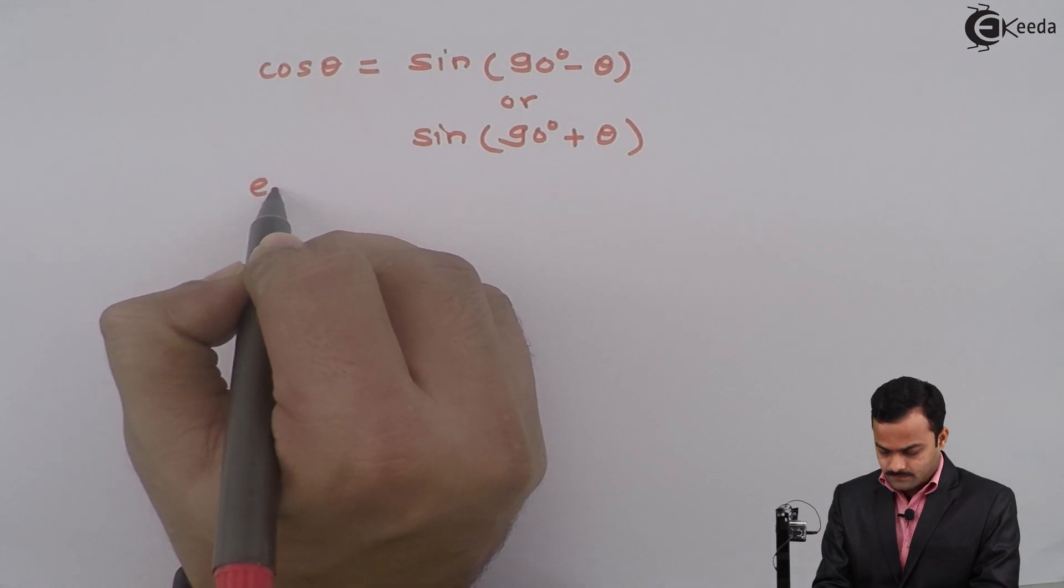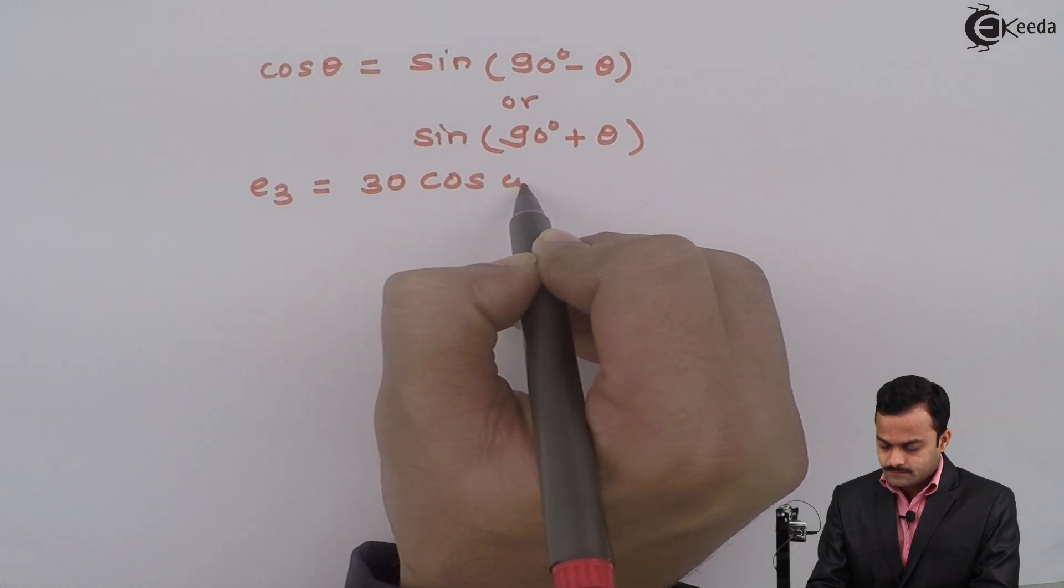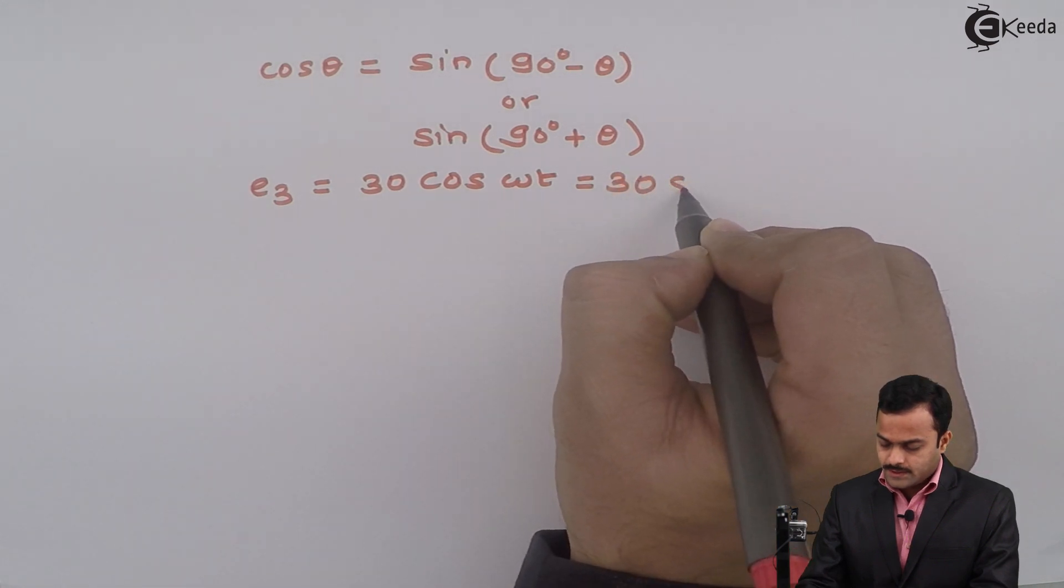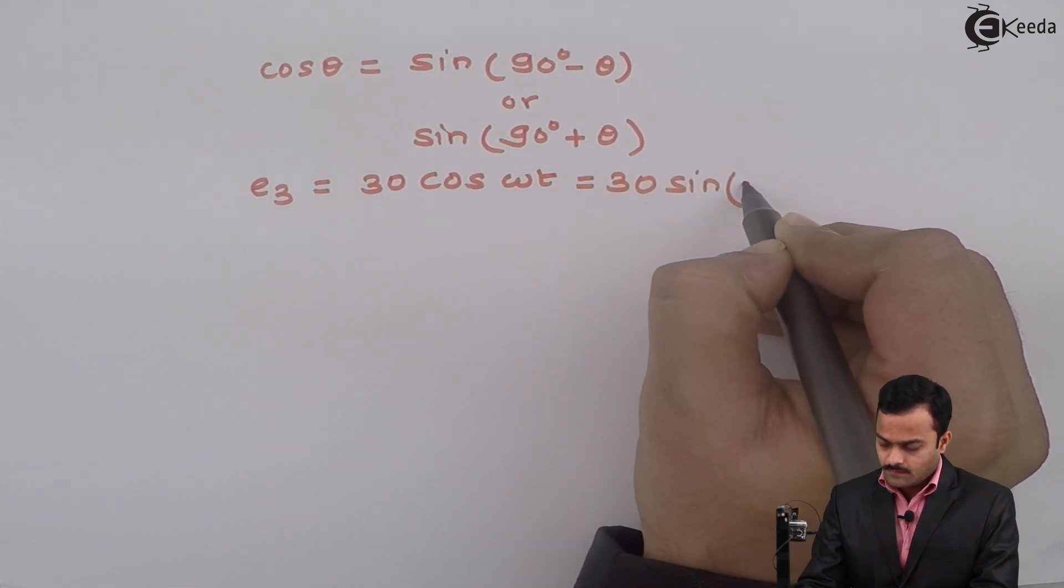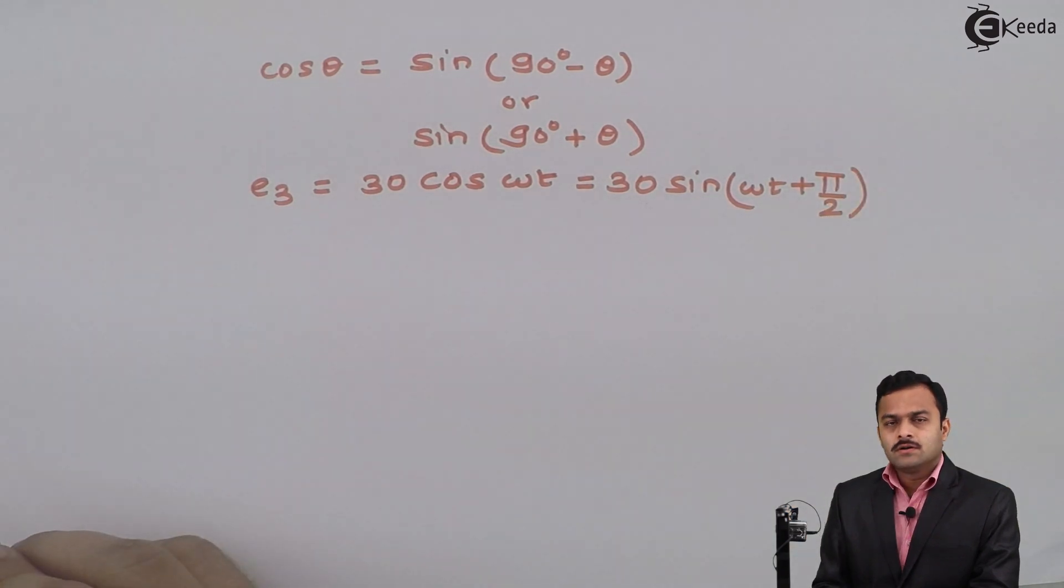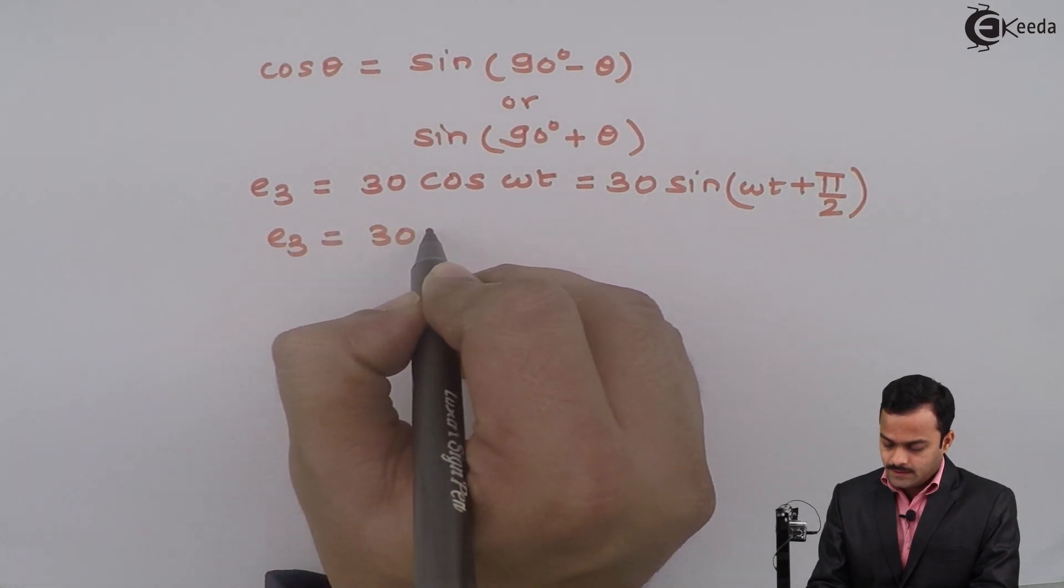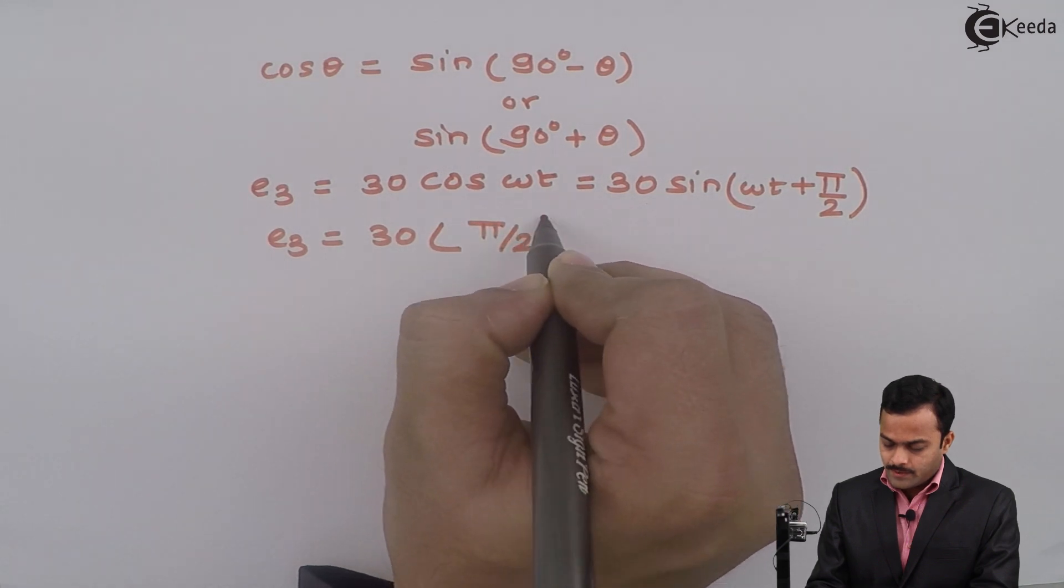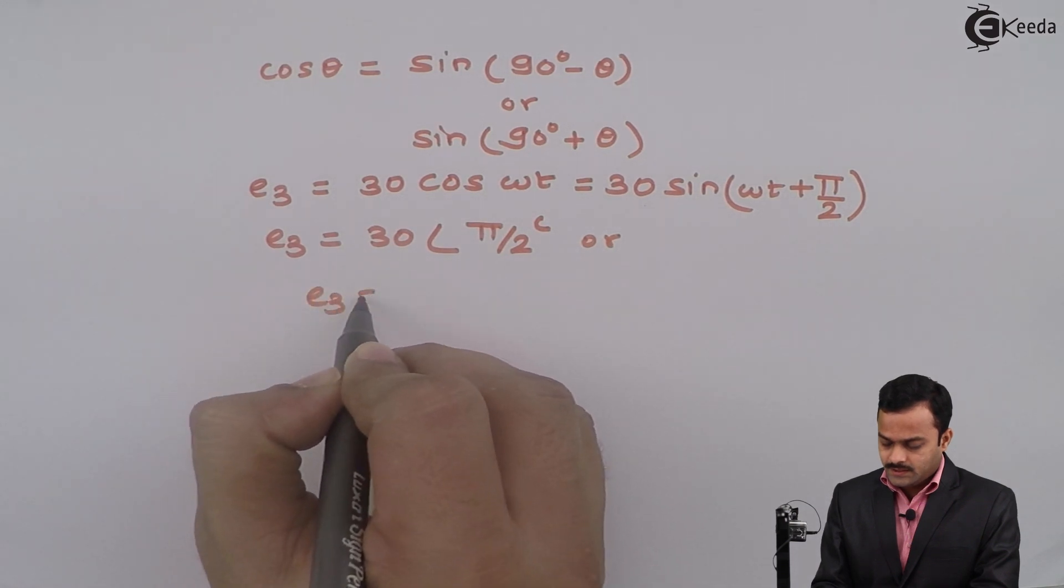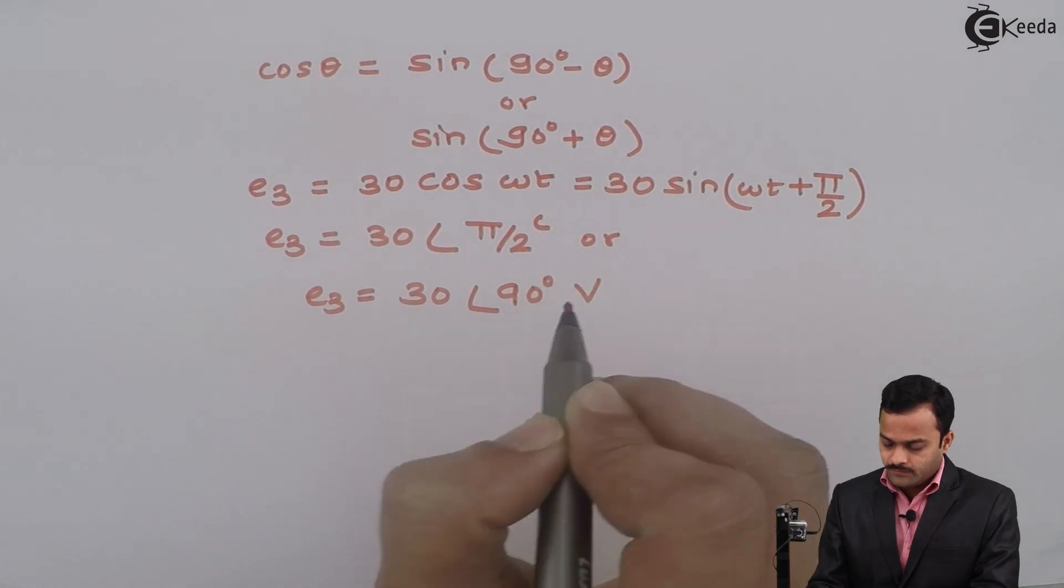So E3 is given as 30 cos(ωt), which is nothing but 30 sin(ωt + π/2). So that I will get E3 as 30 at an angle π/2 radian, or E3 is 30 at an angle 90 degrees volt.